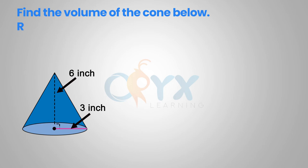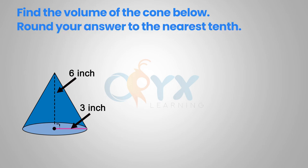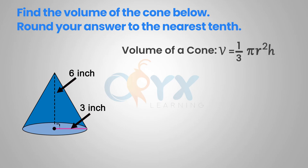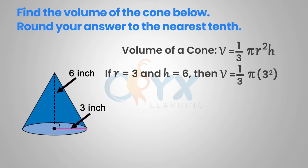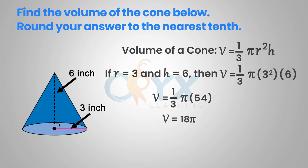Find the volume of the cone below. Round your answer to the nearest tenth. Using the volume of a cone formula, V equals one-third pi R squared H, we can see in the diagram that the radius is 3 and the height is 6. Substituting those values in, we get V equals one-third pi times 3 squared times 6. Simplifying, it gives us V equals one-third pi times 54, and one-third times 54 gives us 18, so V equals 18 pi. Multiplying 18 by pi and rounding to the nearest tenth, the volume of the cone is approximately 56.5 inches cubed.